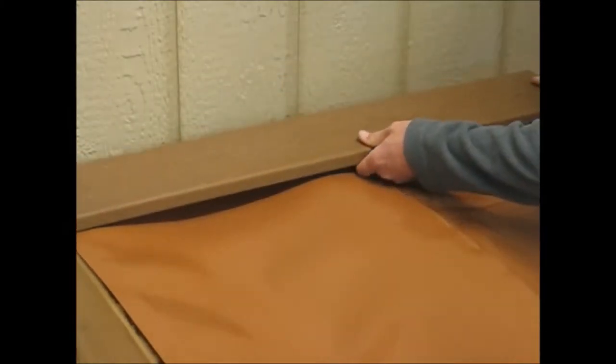Once we've caulked the ledger board to the house, we want to go ahead and pre-cut all of our first deck board. The reason we want to cut and measure to make sure it fits is because once we put down the second layer of caulking, to remove the deck board would be messy.